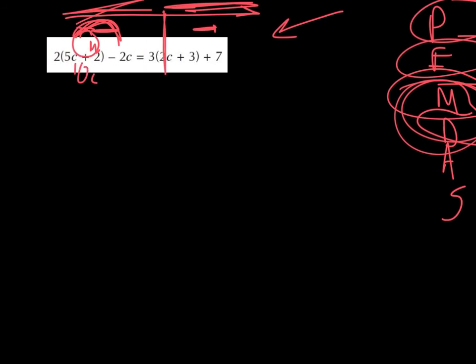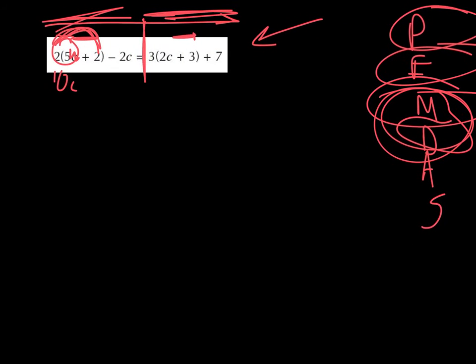So 2 times 2 would be, whoa, whoa, whoa, what's going on? Calm down. Okay, 2 times 2 would be 4. So we do plus 4. Then we bring down the minus 2c. Okay, now we're not going across the equal sign. So we don't have to do the opposites. We're just doing regular math. So we distribute there and there. 6c plus 9 plus 7.